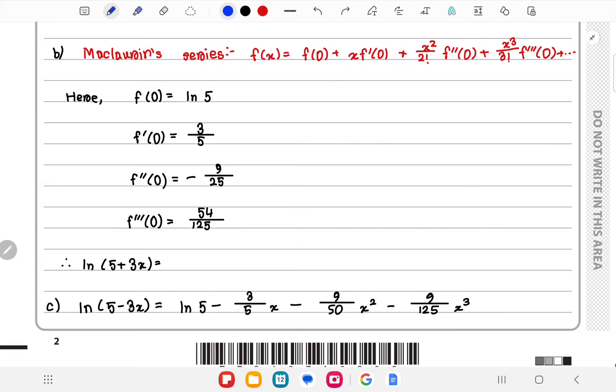Now you can write the Maclaurin series expansion of ln(5+3x) by using this formula. We already know the values of f(0), f'(0), f''(0), and f'''(0). We'll just place them here: get ln 5 plus (3/5)x. Now for this you'd have to put 2! underneath, so this would become -9/50 x². And in the same way, this would become 9/125 x³, and that's the answer.